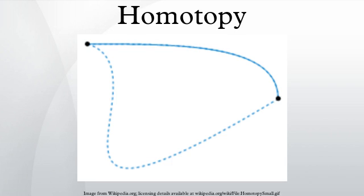In topology, two continuous functions from one topological space to another are called homotopic (from Greek: homos equals same, similar, and topos equals place) if one can be continuously deformed into the other. Such a deformation is called a homotopy between the two functions.